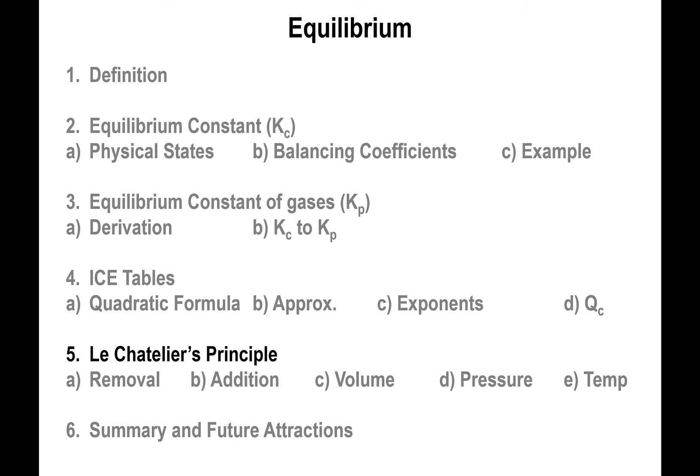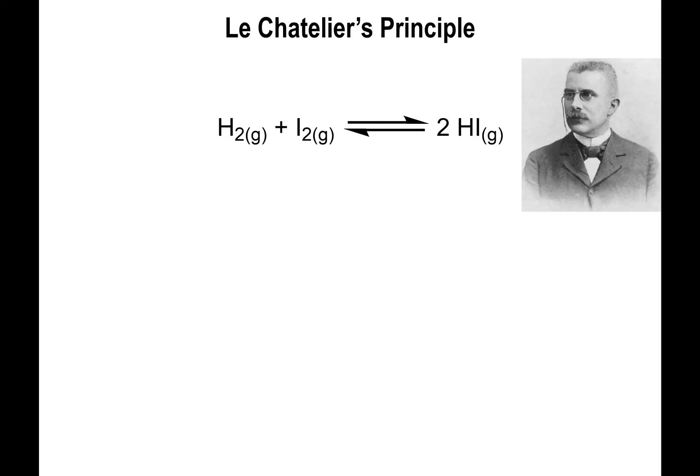This is the last part of the equilibrium lecture: Le Chatelier's Principle. The principle itself is rather simplistic in terms of what it tells you. The idea is that when a reaction is at equilibrium, nothing observable happens. But if you introduce a change to that reaction at equilibrium, you will disrupt the equilibrium and the reaction will proceed to re-attain it. The principle asks: how will the reaction proceed — toward the product side or the reactant side — to achieve equilibrium once more?